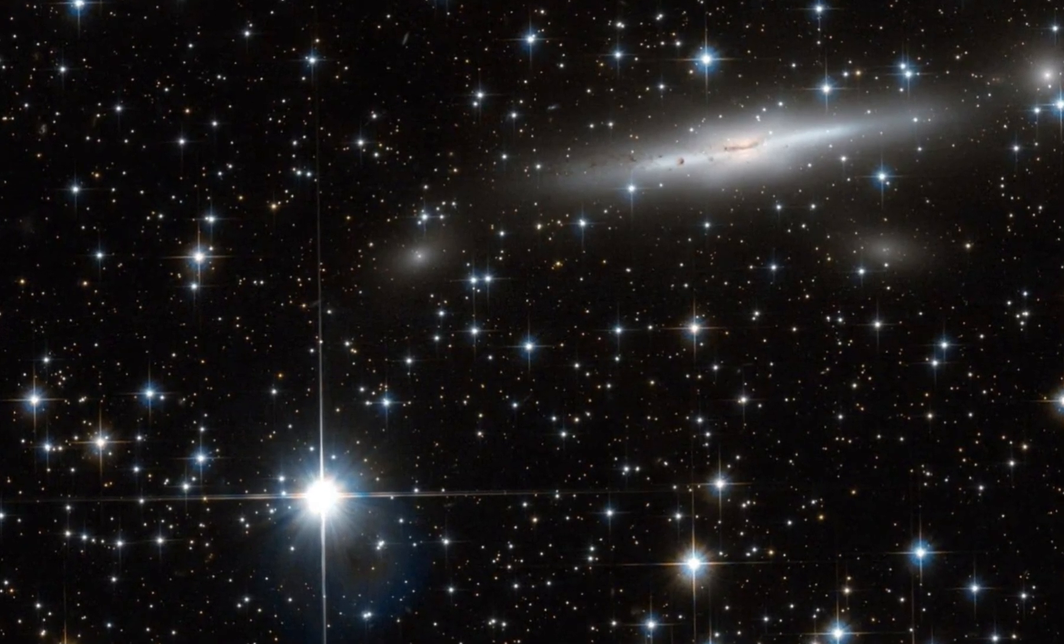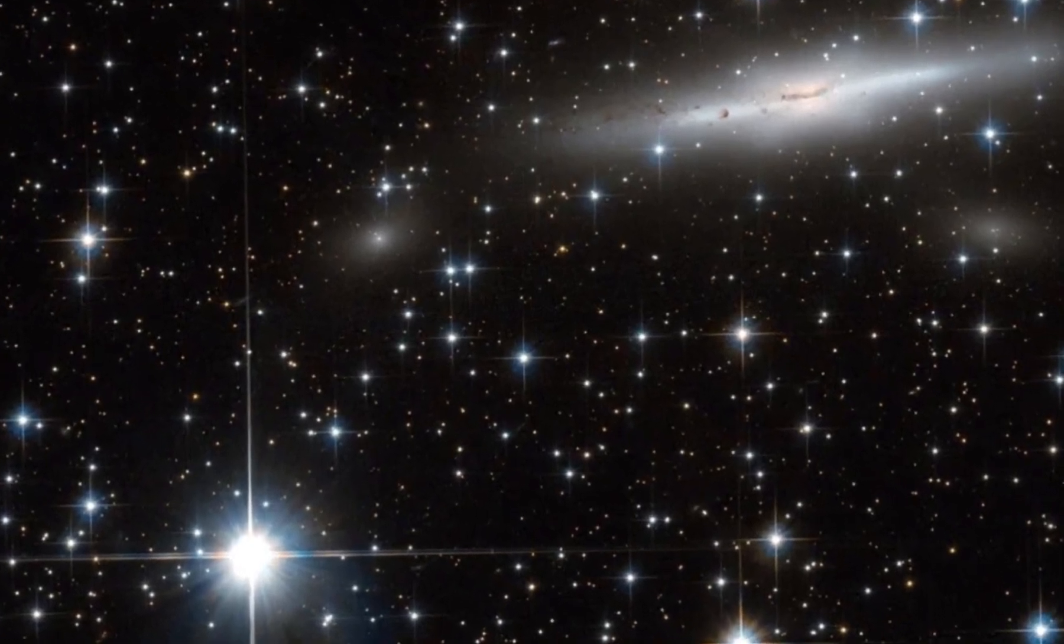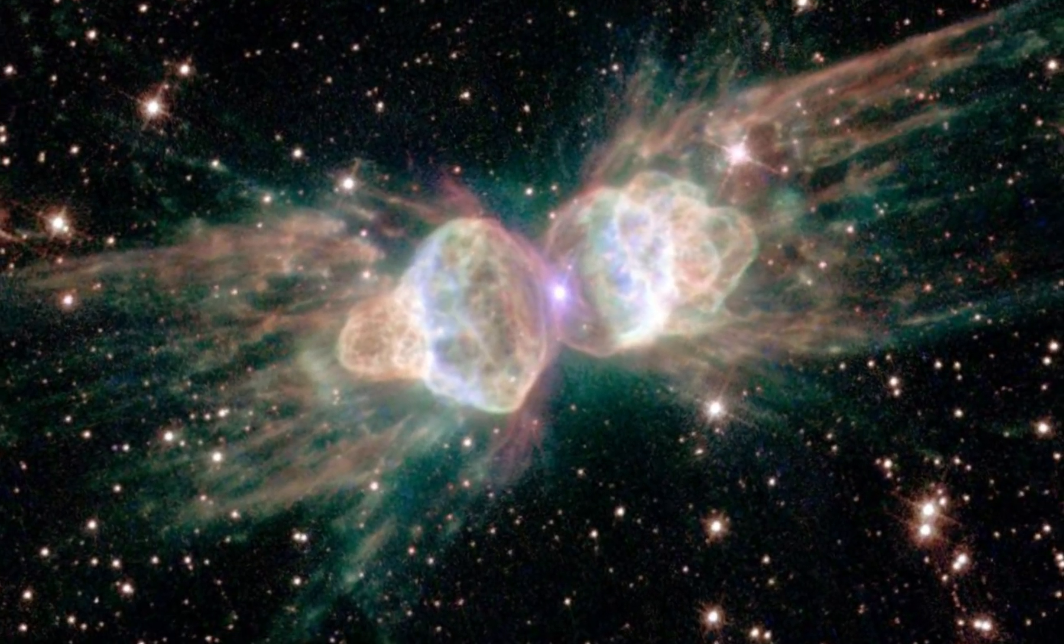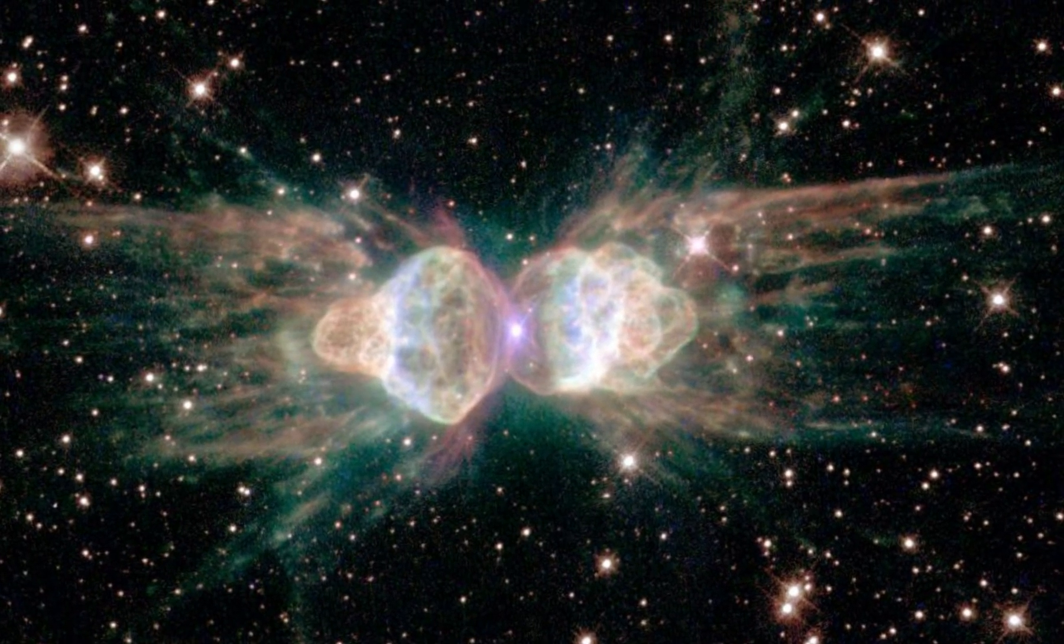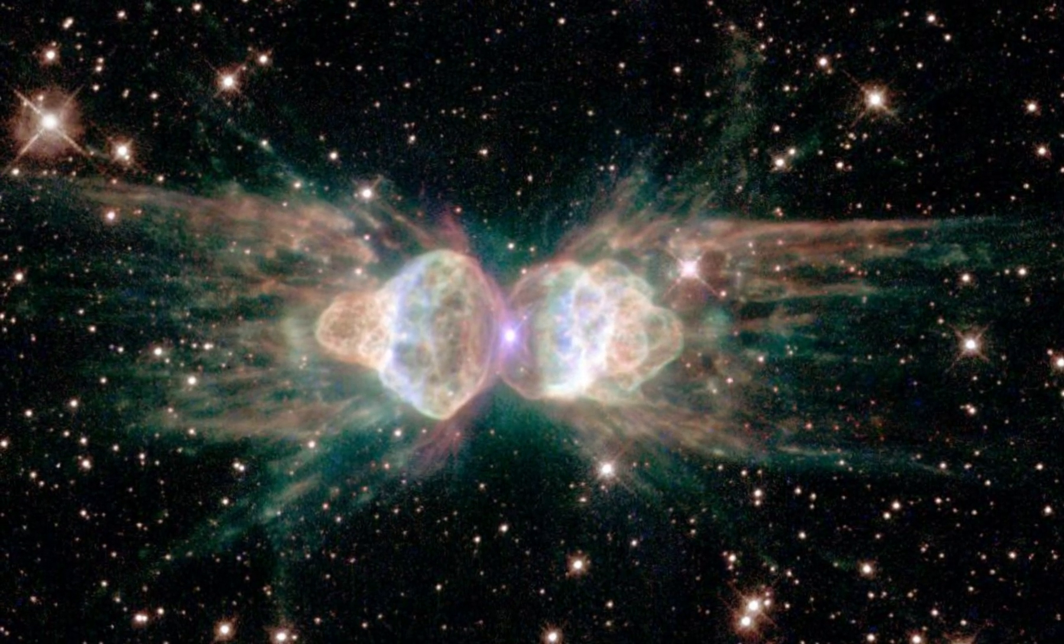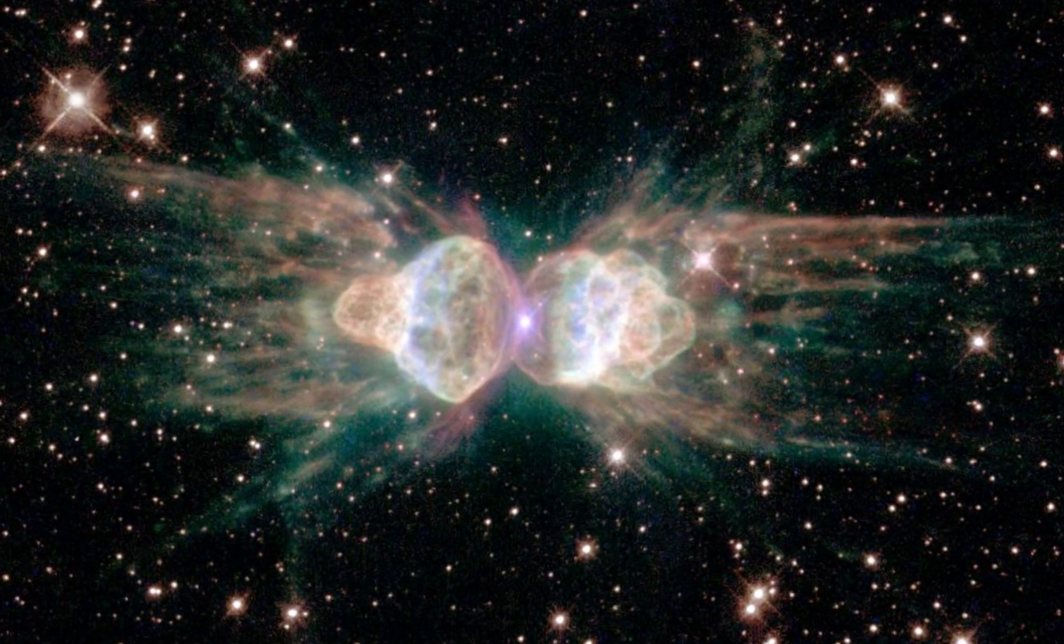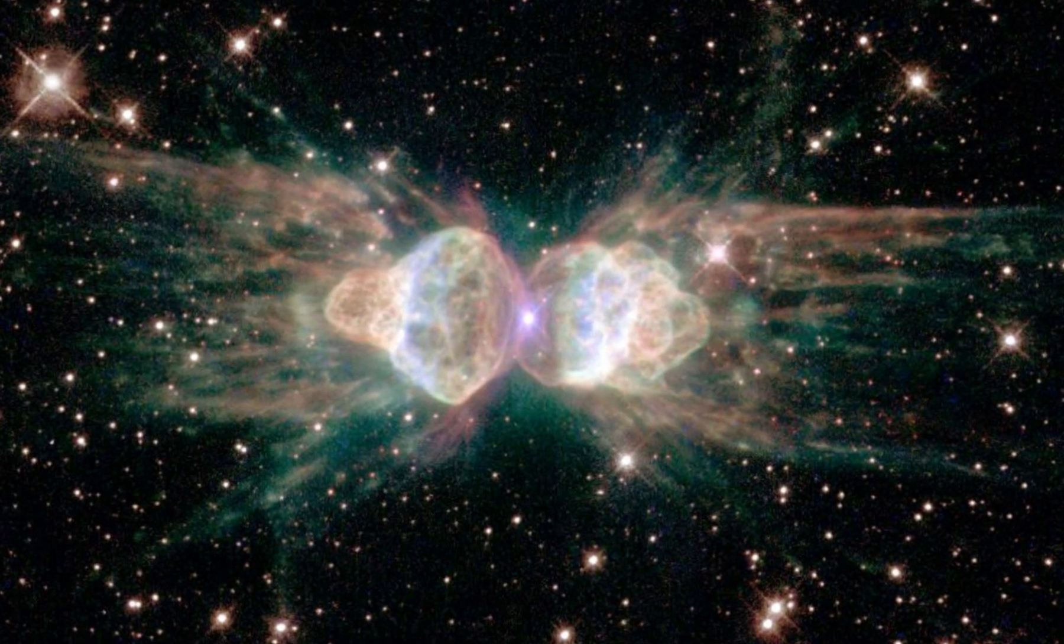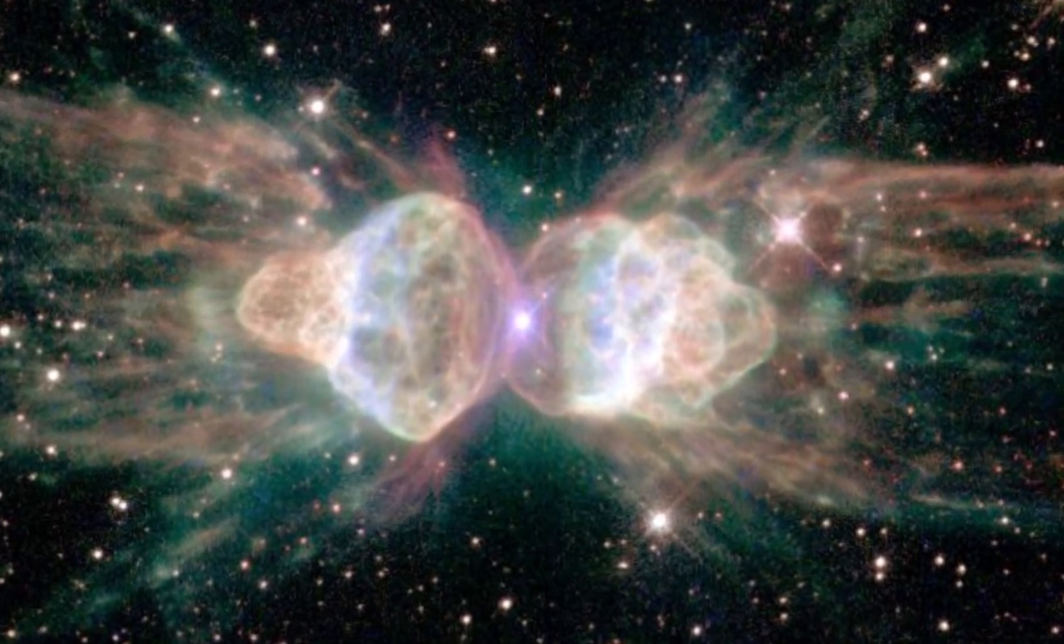Astronomers call it the Great Attractor, a colossal gravitational anomaly 130 million light-years away. But what is causing it? We do not know. It could be an enormous cluster of galaxies, or something even stranger. The problem? It's hidden behind the Milky Way in a region called the Zone of Avoidance. This makes it nearly impossible to study, but whatever it is, it's pulling entire galaxies toward it. And we don't know why.